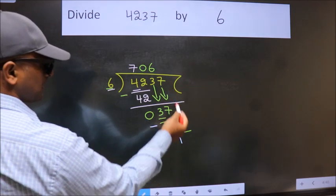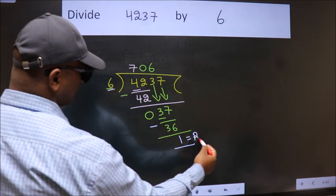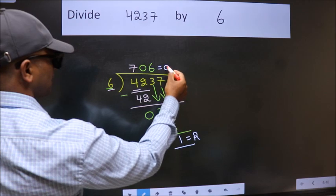No more numbers to bring it down. So, we stop here. This is our remainder. This is our quotient.